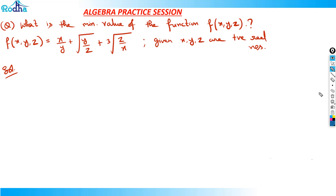Let's see this question. It says: what is the minimum value of the function f(x, y, z) = x/y + √(y/z) + ∛(z/x), where x, y, z are positive real numbers?